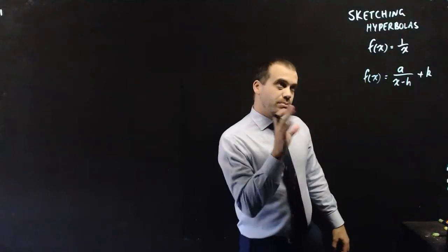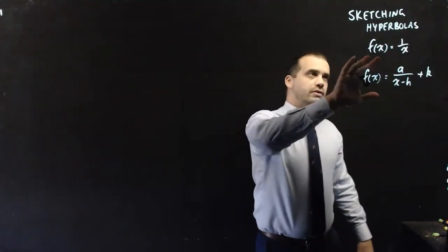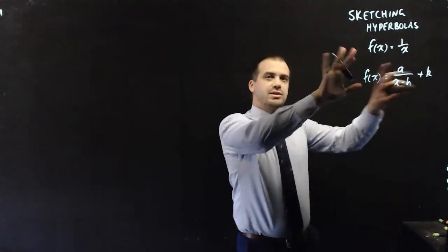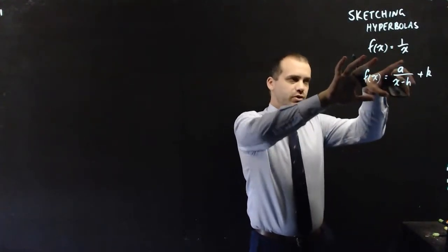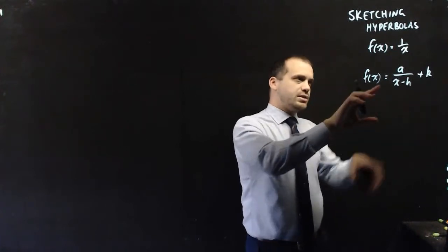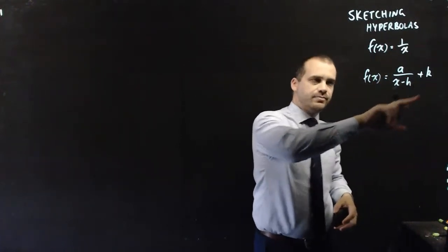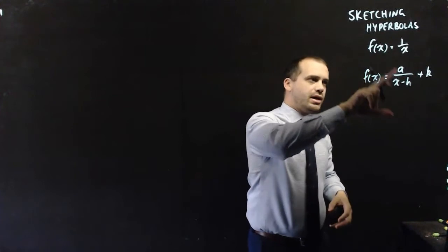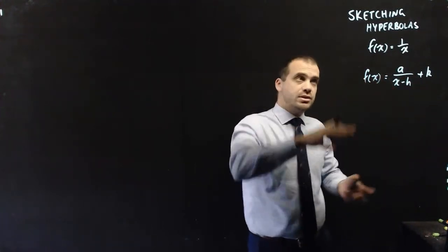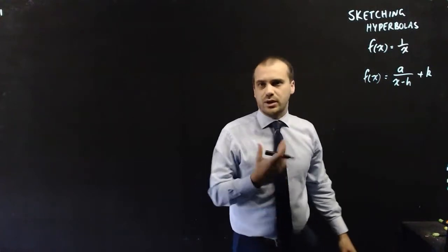Now we're going to be sketching hyperbolas. Hyperbolas are of the form f(x) = 1/x — that's the simplest, most basic hyperbola you can find. We're also going to look at f(x) = a/(x - h) + k, where a, h, and k are transformations of this simpler form, f(x) = 1/x.